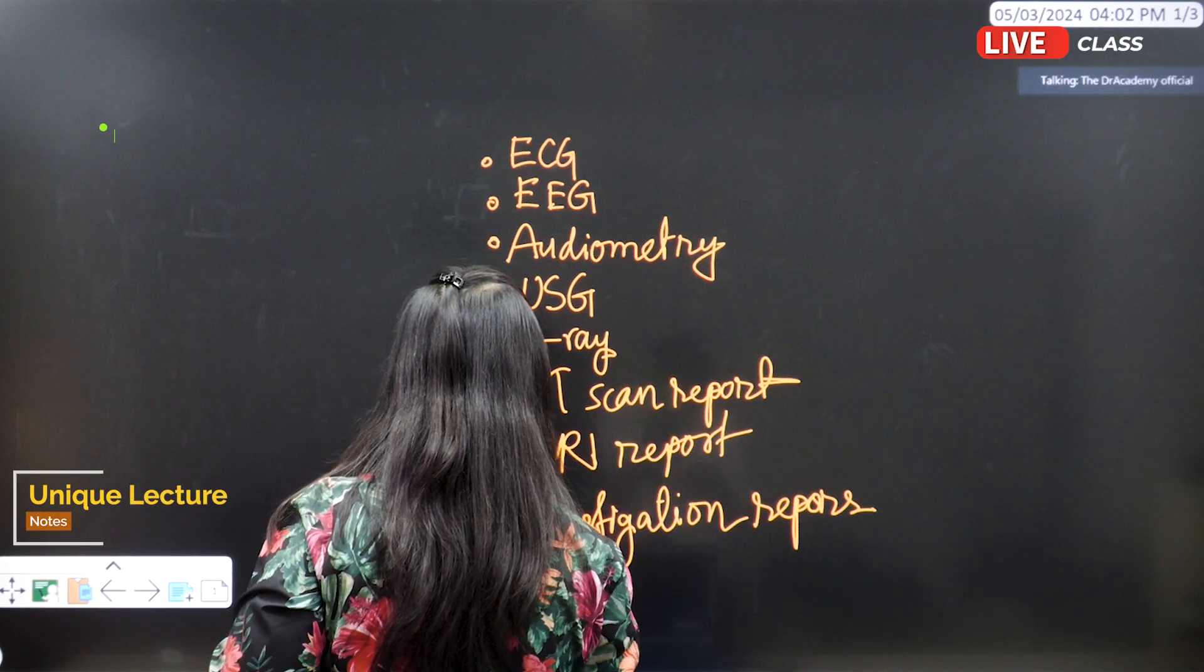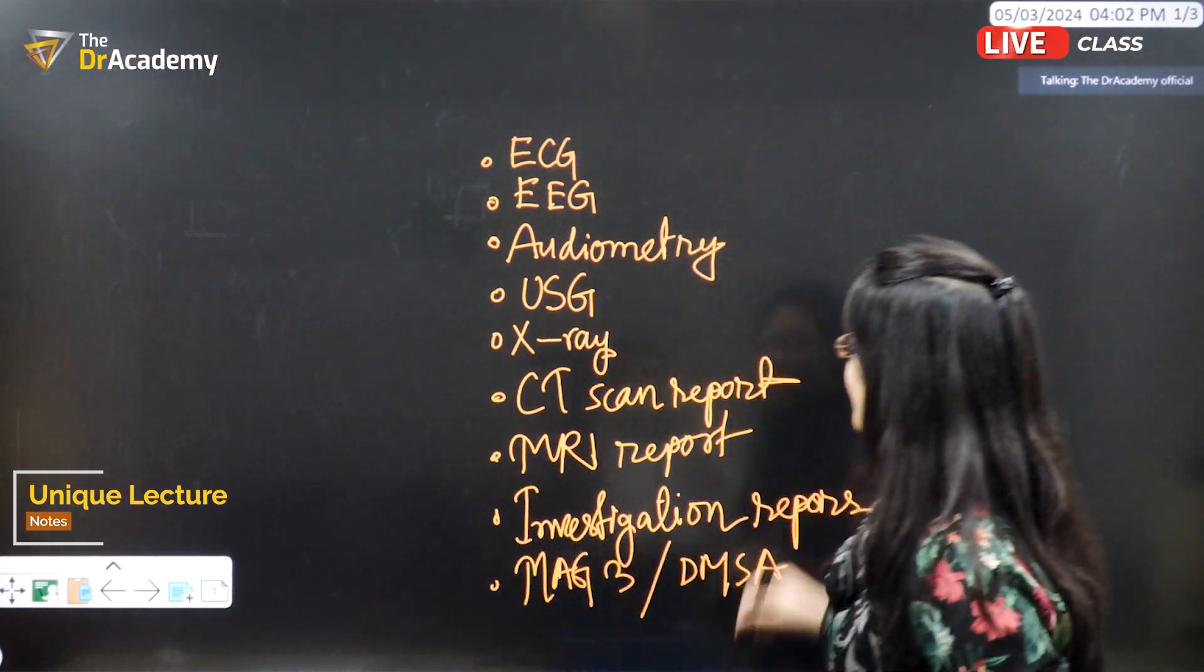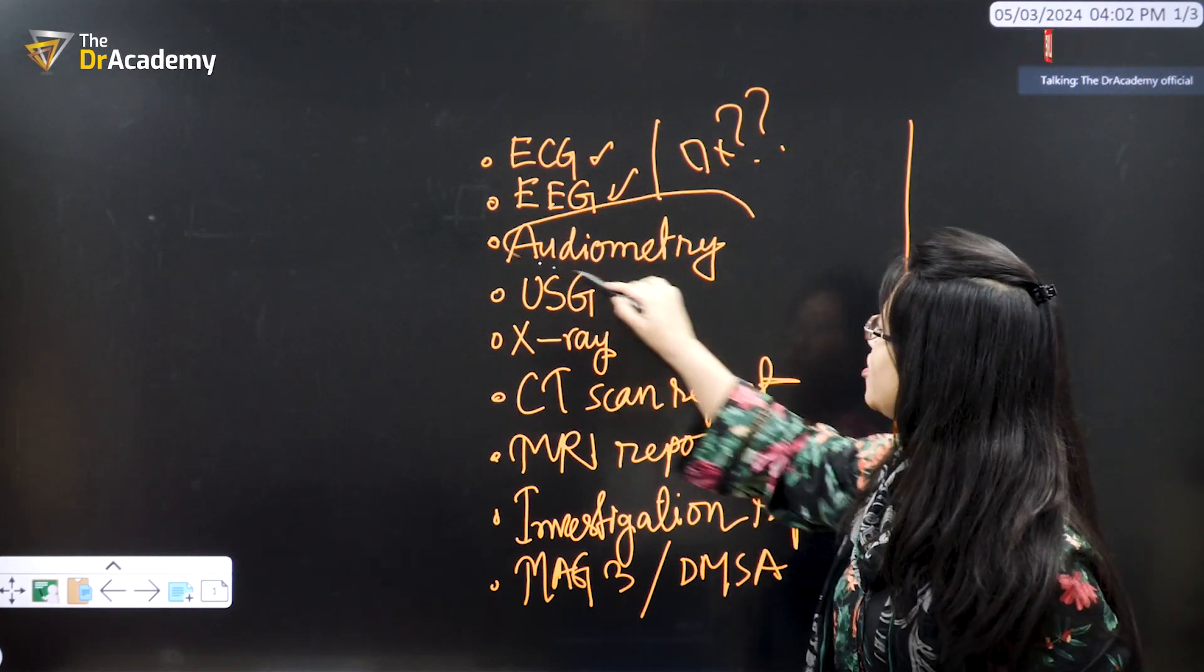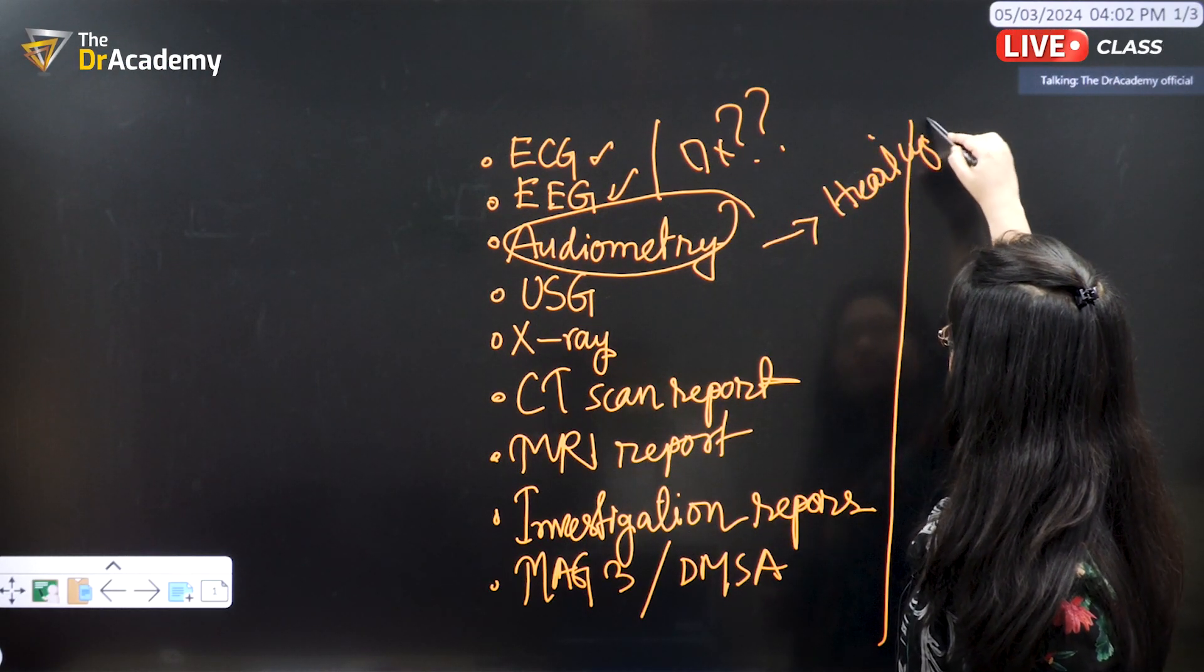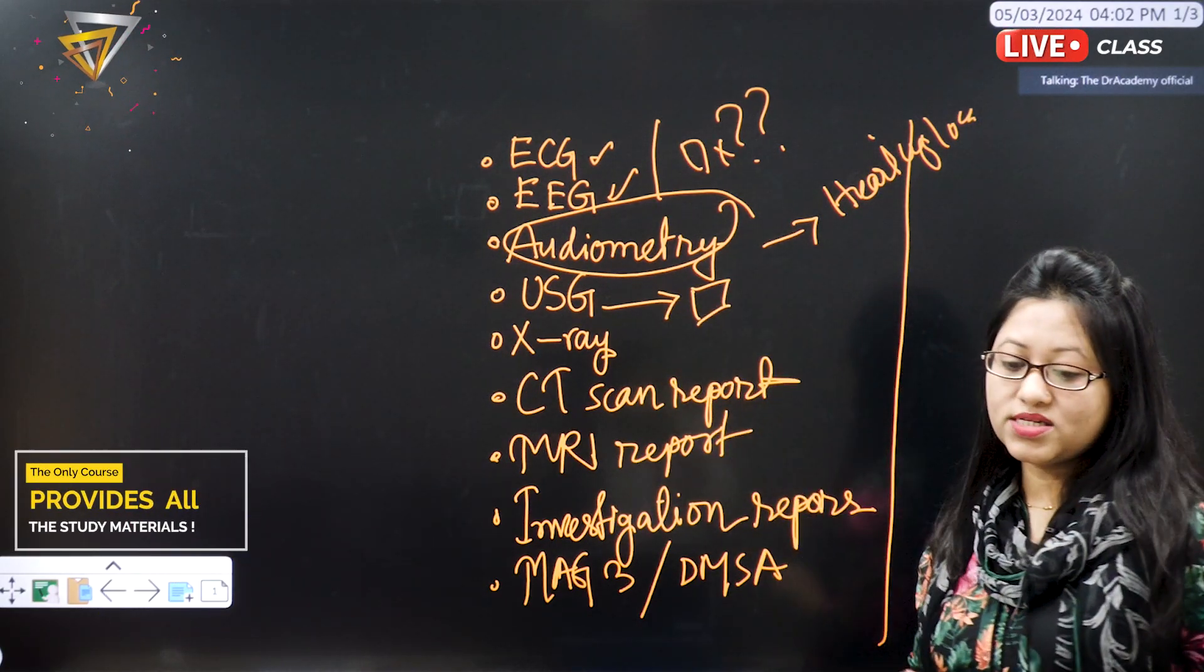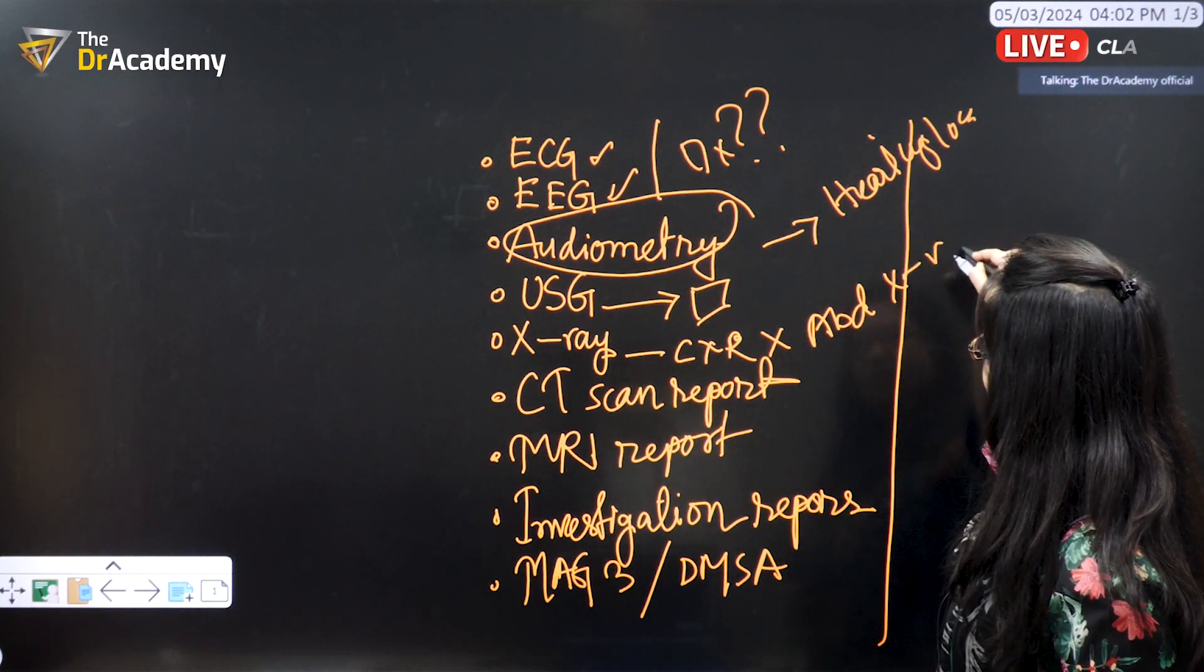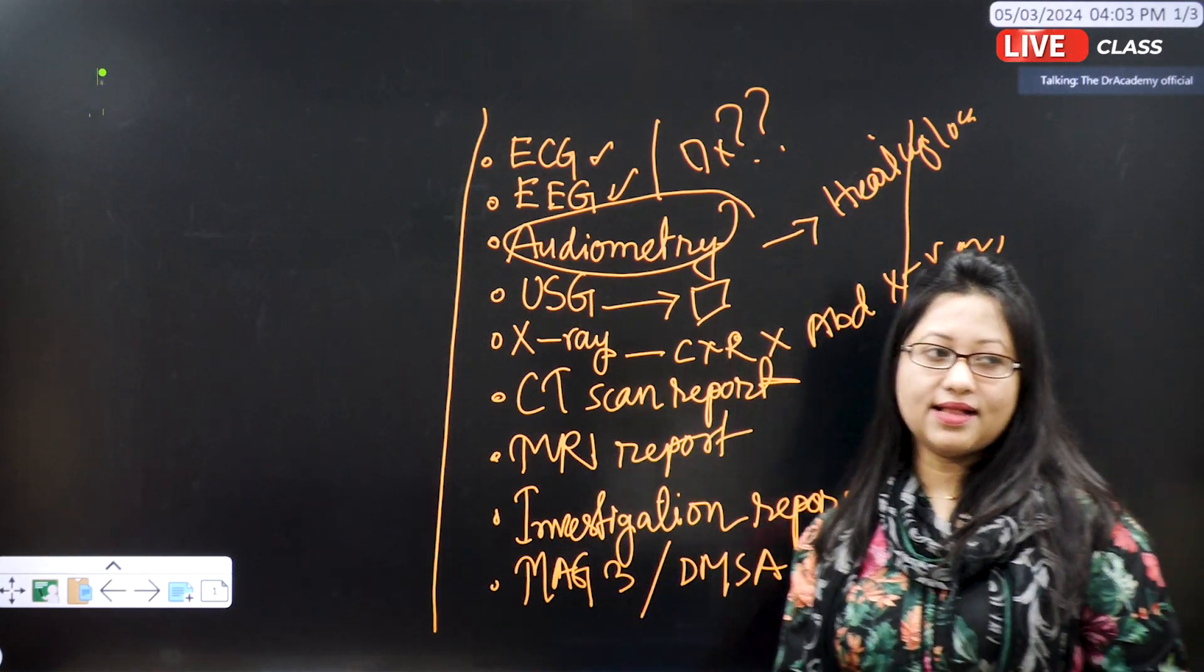Sometimes, MAG-3 or DMSA is also given. So, they will assess you by seeing the ECG, EEG, whether you can understand the diagnosis or not. By looking at the audiometry, you can understand which type of hearing loss is present. By looking at the ultrasound, you have to diagnose what they are trying to say. The x-ray, both the chest x-ray and abdominal x-ray, both will be given. So, these things will be extra with the clinical scenarios.